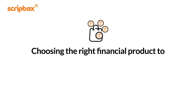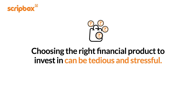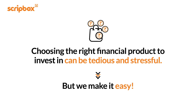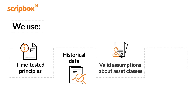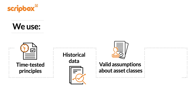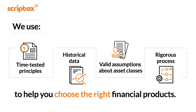When you have thousands of financial products, choosing the right one to invest in can be tedious and stressful, but we make it easy. Scriptbox's algorithms use time-tested principles, historical data, and valid assumptions about asset classes, combining them with a rigorous process to finalize which asset classes make the most sense for your objectives.